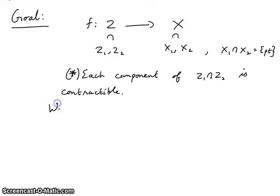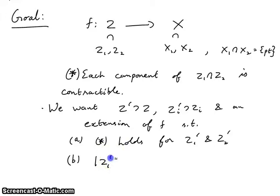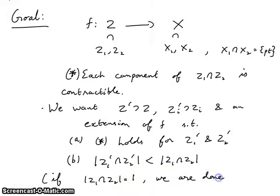Our goal was to extend: we want Z' containing Z, Z'ᵢ containing Zᵢ, and an extension of f such that star holds for Z'₁ and Z'₂—that is, each component of their intersection is contractible. The second thing we need is that the number of components of Z'₁ intersection Z'₂ is strictly less than that of Z₁ intersection Z₂. If Z₁ intersection Z₂ had only one component, we are done; otherwise, we shall prove this.